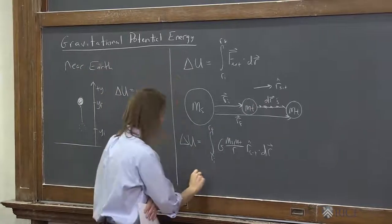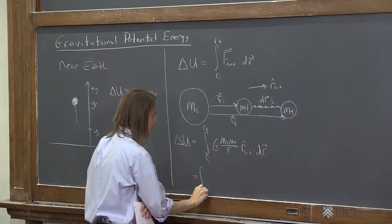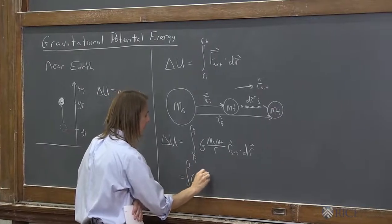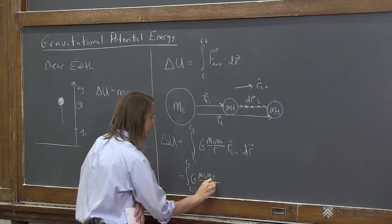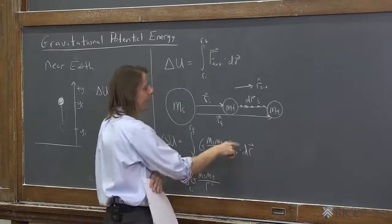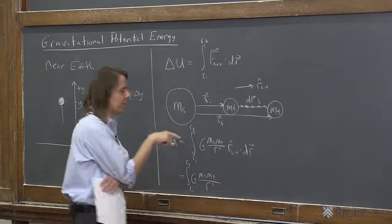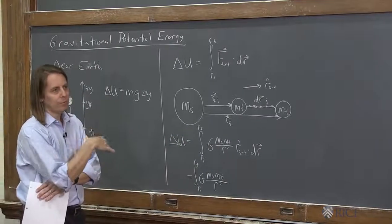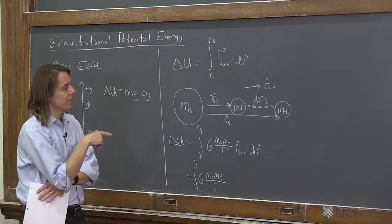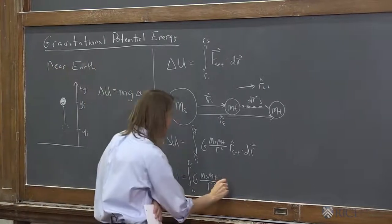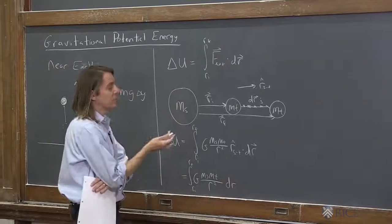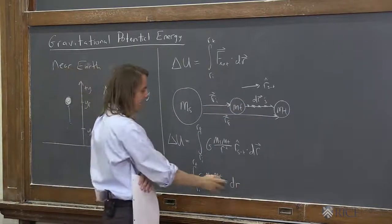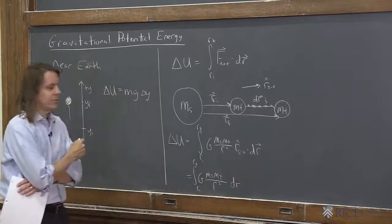We could write another step: the integral from ri to rf of G m source m test over r squared. That dot product is the magnitude of the unit vector r-hat (which is 1), times the magnitude of dr vector (which is dr), times the cosine of the angle between them. But that's 0 degrees, so cosine is 1. We just took out the dot product - now we just have an integral.